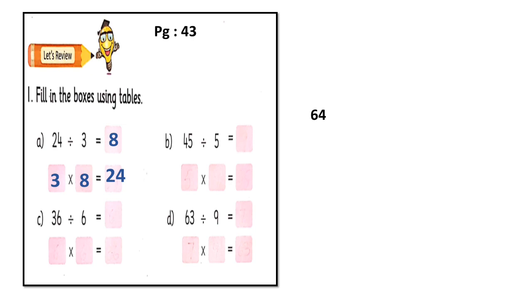Okay, let's see the next part. 45 divided by 5. How many times we will multiply 5 to get number 45? 9 times. It means 5 nines are 45. We will write 5 multiplied by 9 is equal to 45. We can write the division sentence in multiplication sentence as well.